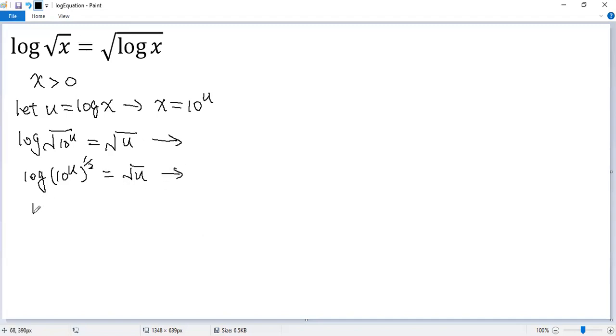Continue. So log, using exponent rule, we get 10 to the power of u over 2 equals square root of u. Now we can put the exponent in front of log. So we get u over 2 log 10 equals square root of u.